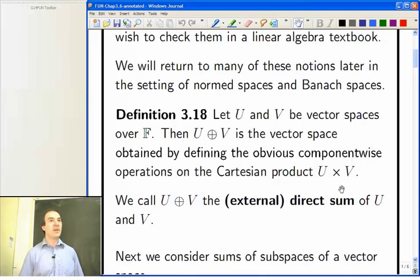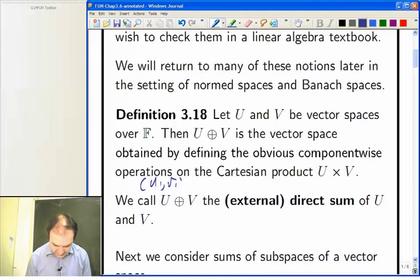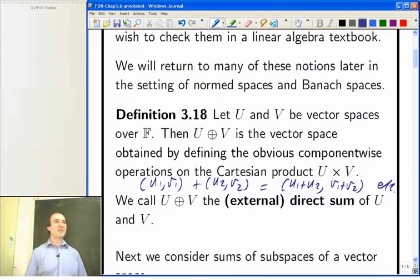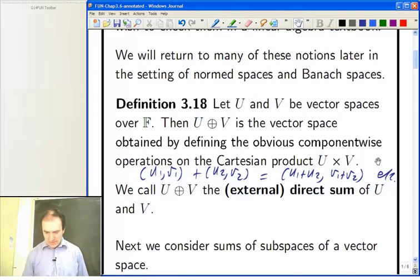so ordered pairs and then we do the usual component-wise operations so that U1 V1 plus U2 V2 is U1 plus U2 V1 plus V2 and so on. The other one you need is scalar multiplication where you take your scalar and you multiply it by both coordinates. And that's your external direct sum.